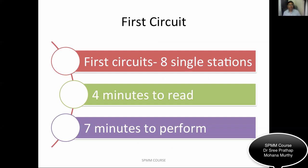In the real examination, you will have two circuits. In the first circuit, you will have eight single stations with four minutes reading time and seven minutes performance time, with a warning at the end of six minutes. In the new digital format, an invigilator will be present in each station. After the reading time, the invigilator will ask you to start performing. At the end of seven minutes, you must stop and move to the next station.